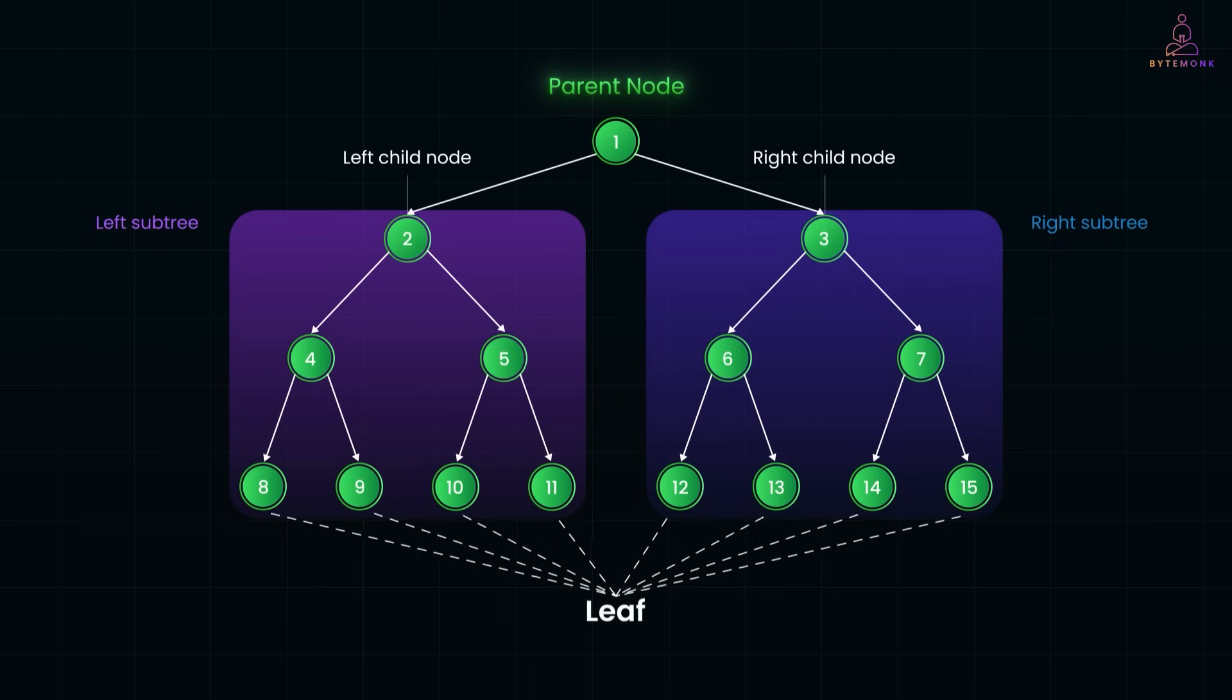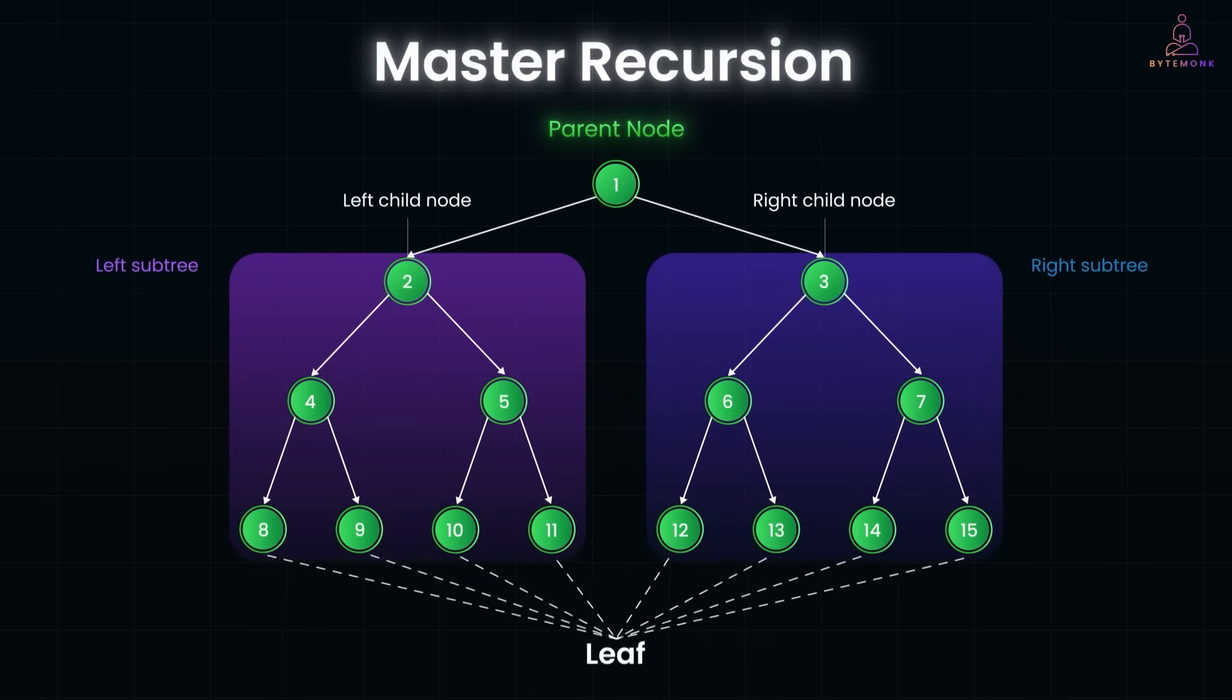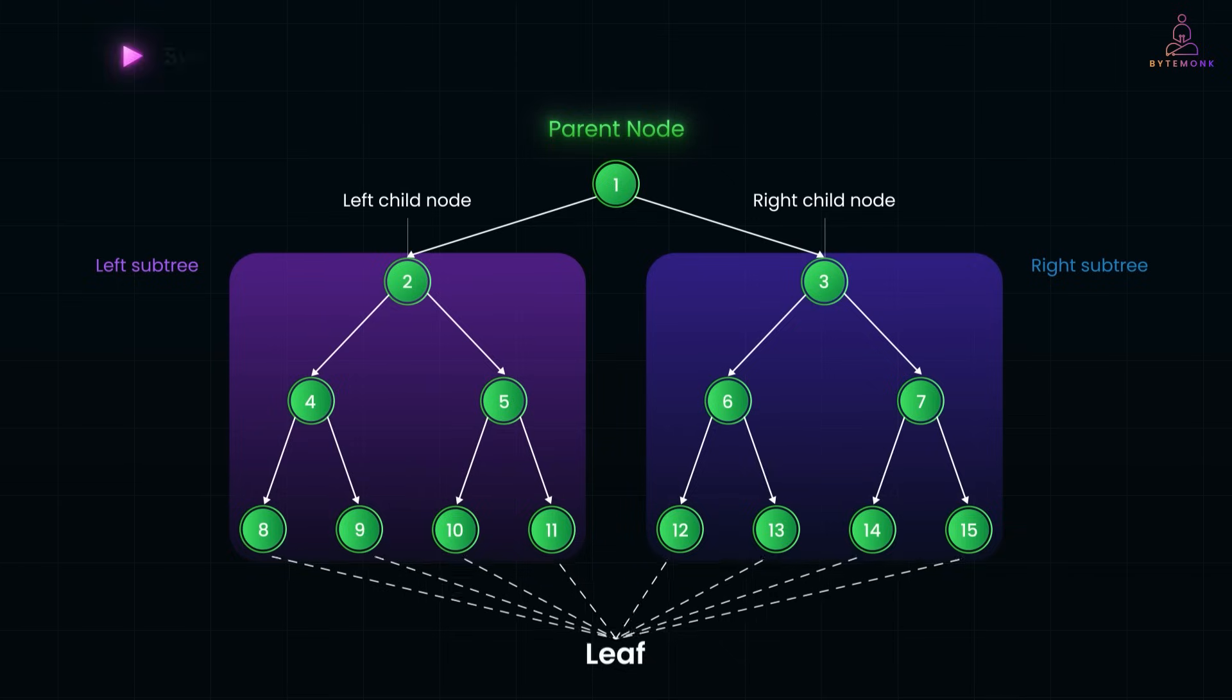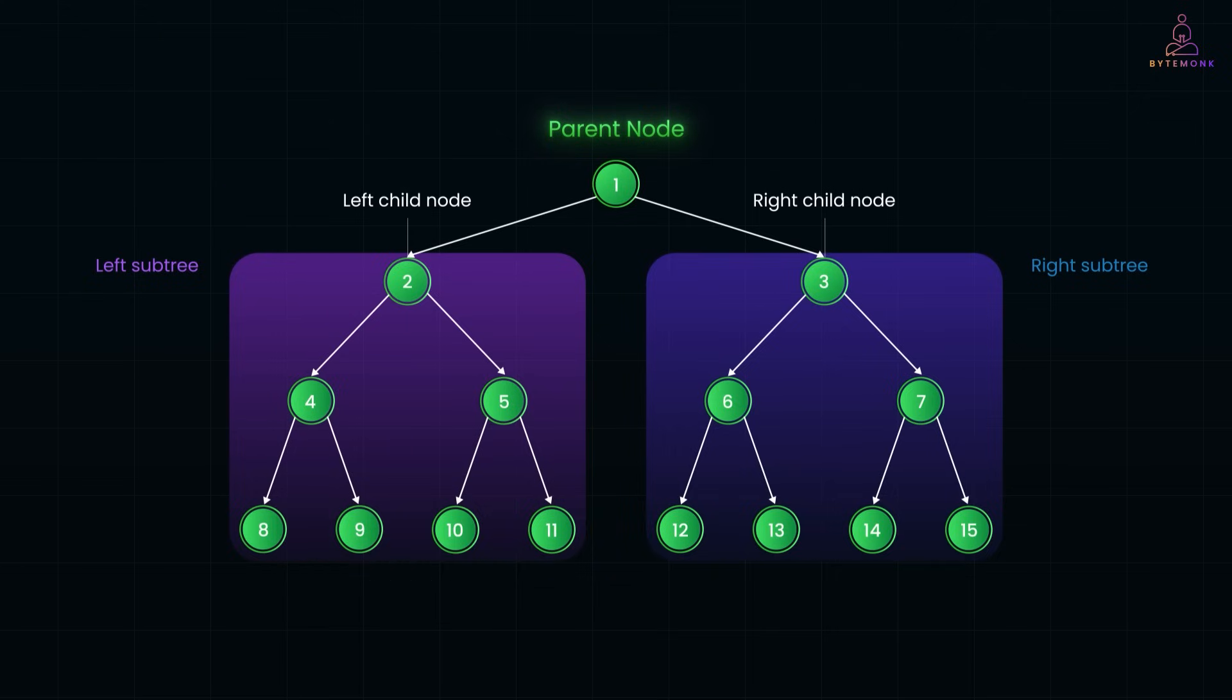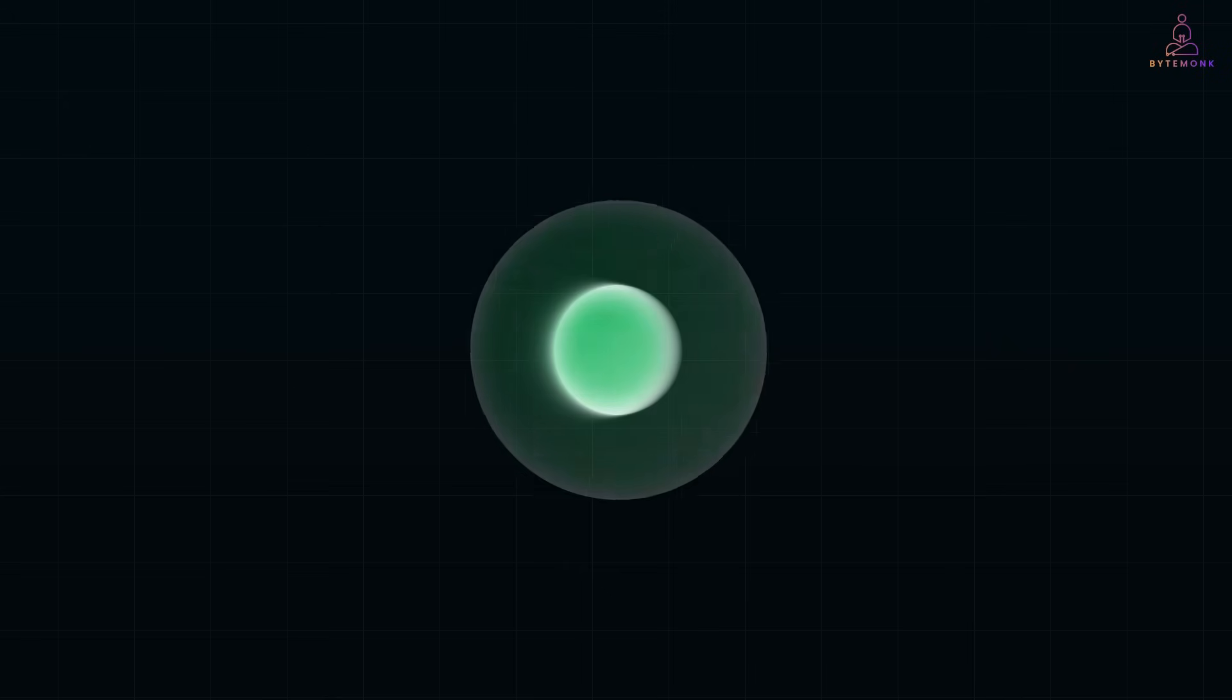And here is one more reason to stick with trees. They are one of the best ways to understand and master recursion. Once you start solving problems on trees, recursion won't feel abstract anymore. It will just click. So if you're serious about system design, competitive programming, or building fast backends, knowing trees is essential. So go ahead, implement one, break it, rebuild it, and you will never look at file systems or database queries the same way again. Thanks for watching and I'll see you in the next one.